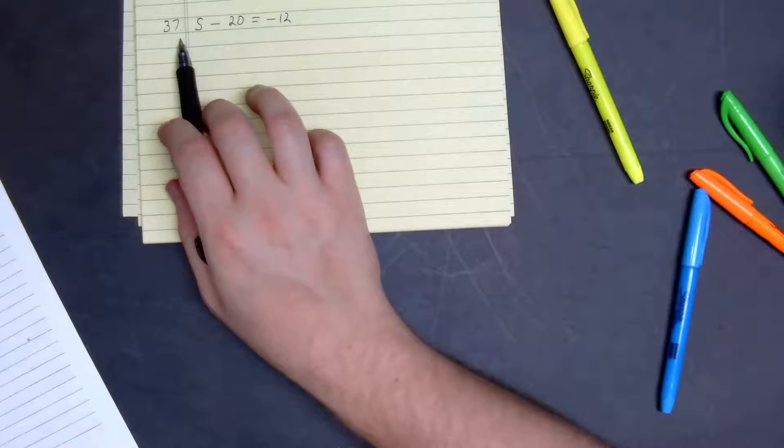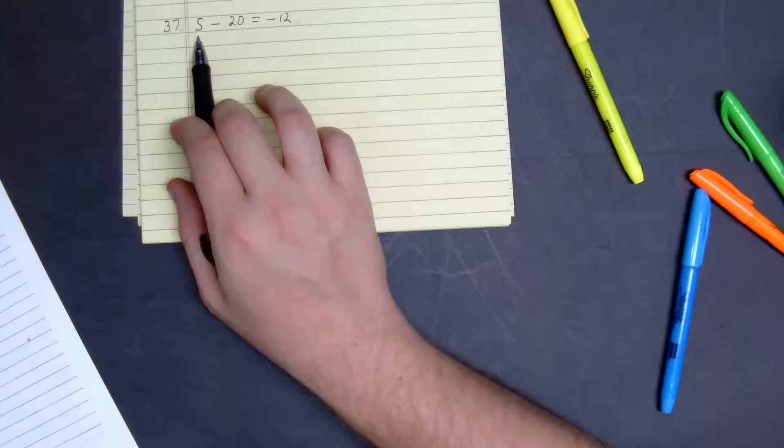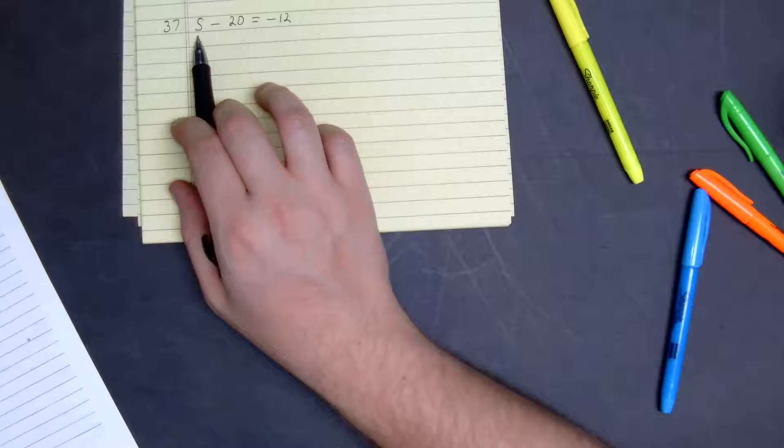Again, number 37, they want us to solve for S. It does look like a 5 a little bit behind handwriting, but it is an S.